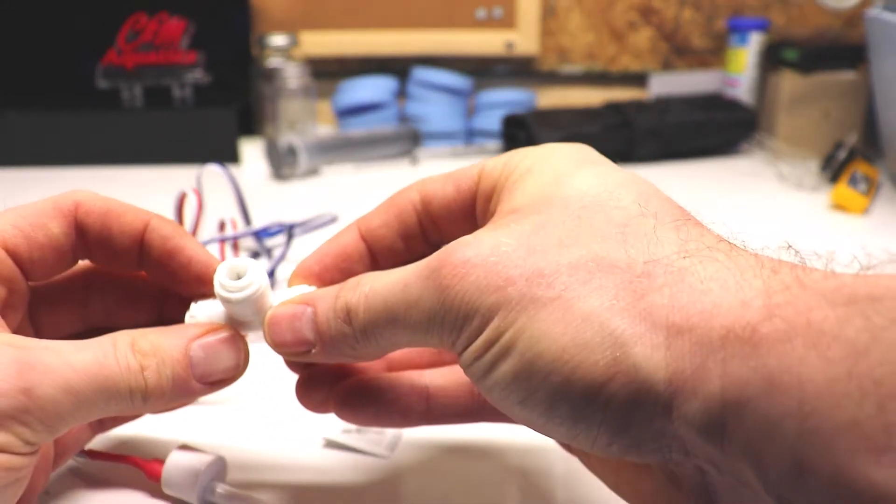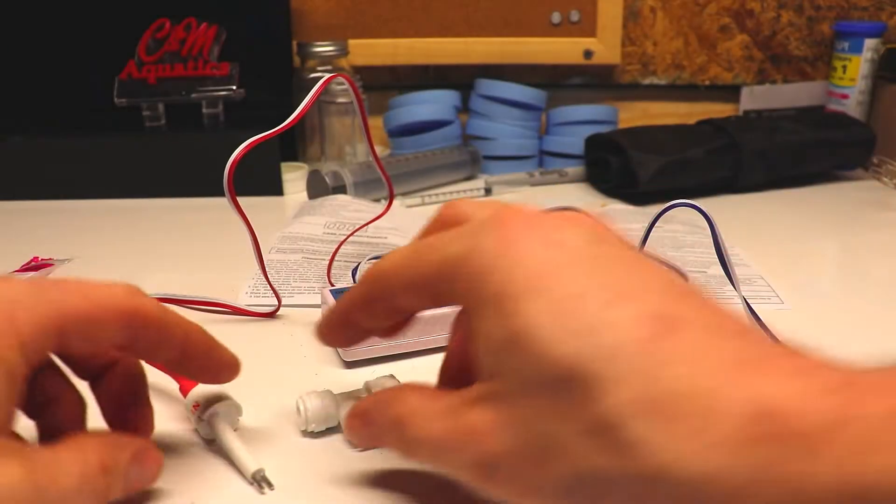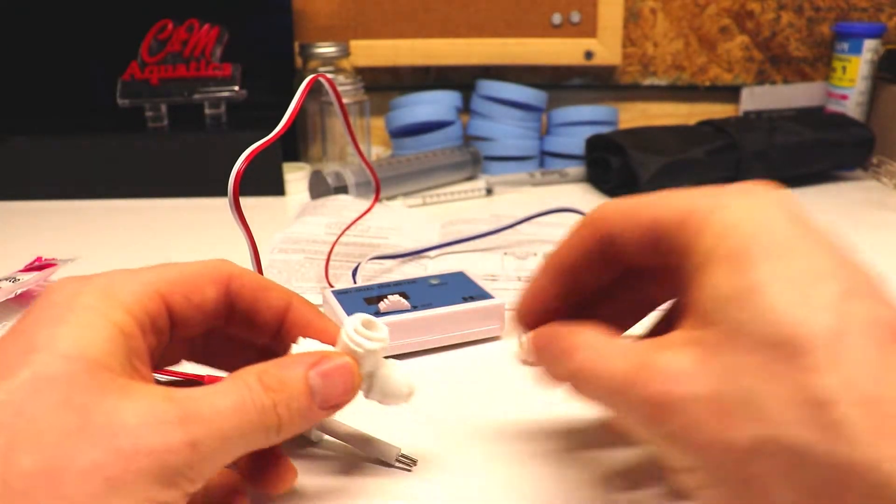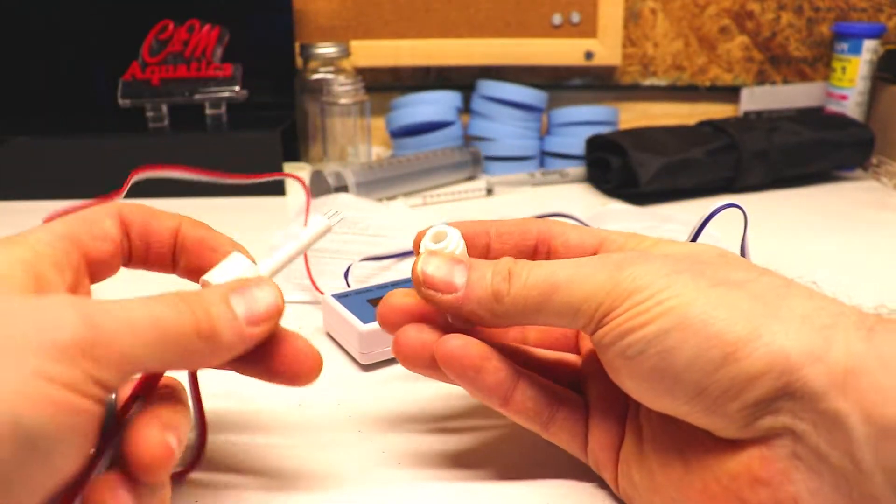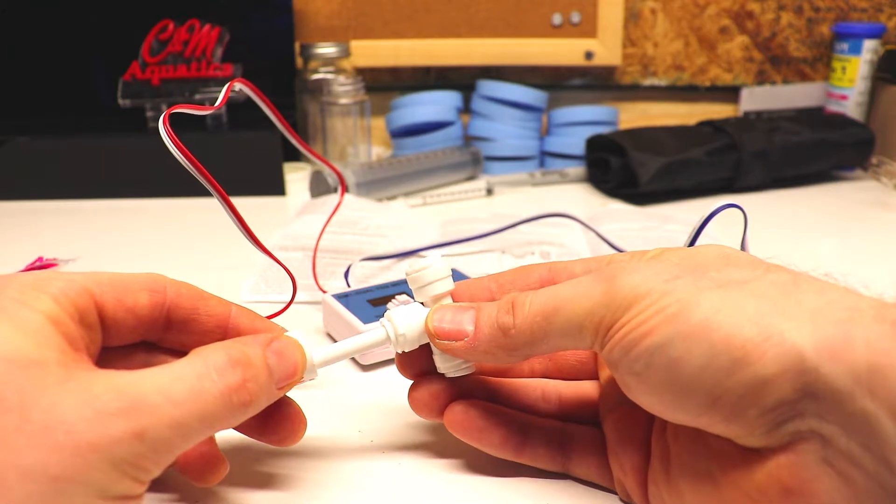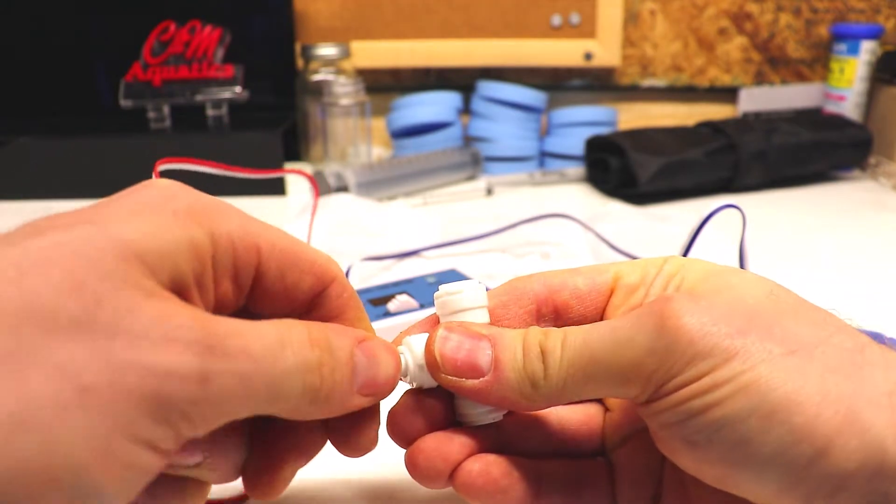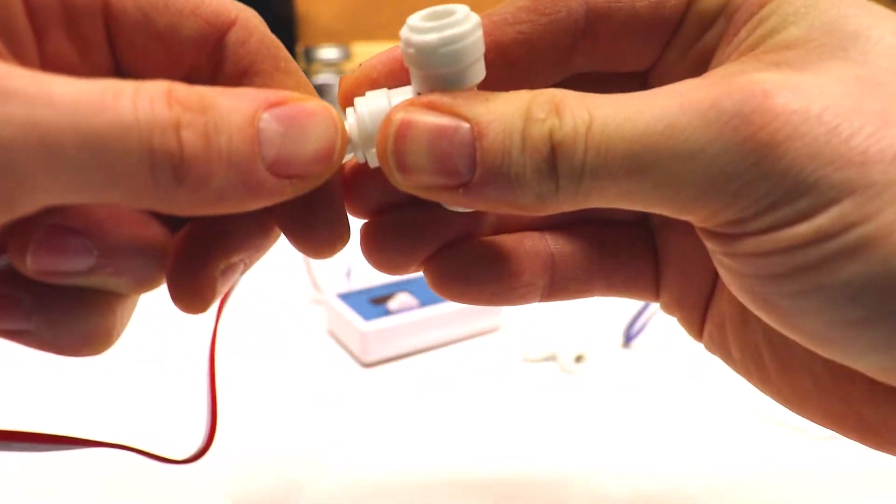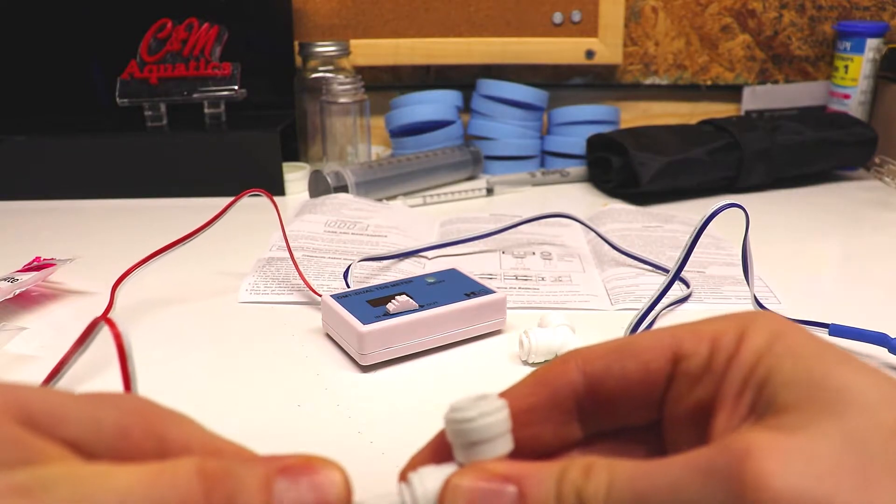Okay, so the first thing we need to do is take our T and we're going to put our probe into the bottom port on the T. These T's are the SharkBite brand, just quarter-inch SharkBite T's. You can find them pretty much anywhere, any hardware store.